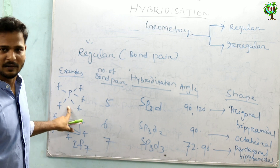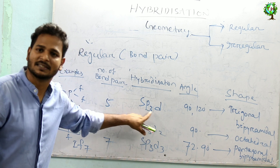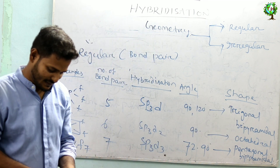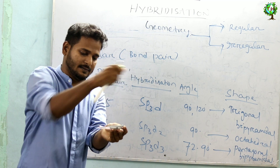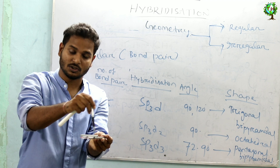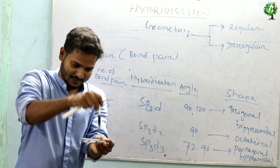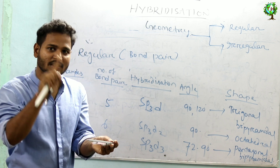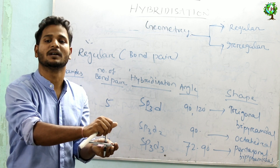Next, if there are five bond pairs — for example PF5 — the hybridization is SP3D. Five hybrid orbitals are formed. The shape is trigonal bipyramidal. The equatorial angle between them is 120 degrees and the axial angle is 90 degrees. So in trigonal bipyramidal structure there are two angles: equatorial–equatorial 120 degrees and axial 90 degrees.